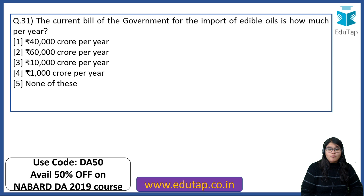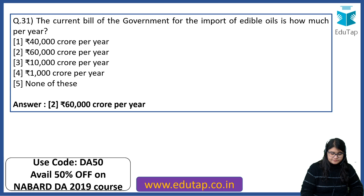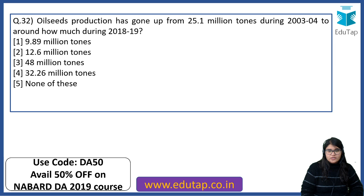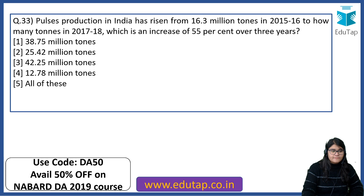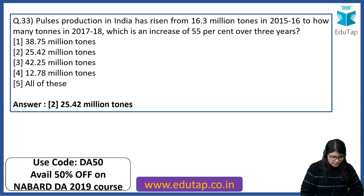The current bill of the government for the import of edible oils is how much per year? The right answer is 60,000 crore per year. Oil seeds production has gone up from 25.1 million tons during 2003-04 to around 32.26 million tons during 2018-19. Pulse production in India has risen from 16.3 million tons in 2015-16 to 25.42 million tons in 2017-18, which is an increase of 55% over 3 years.